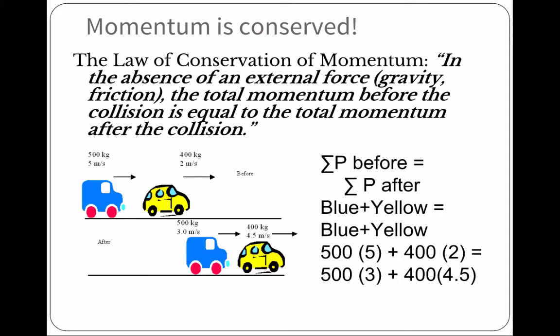The law of conservation of momentum says that in the absence of an external force, gravity or friction, those are your external forces, the total momentum before the collision is equal to the total momentum after the collision. And we are talking about immediately after the collision. Okay, you can't wait 34 seconds and then look at the momentum. So, the total momentum before is equal to the total momentum after.